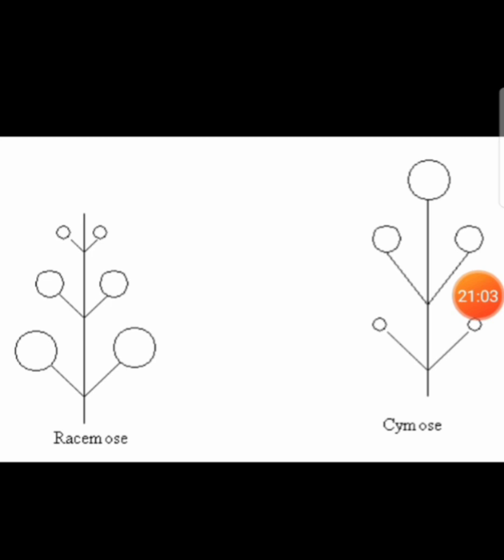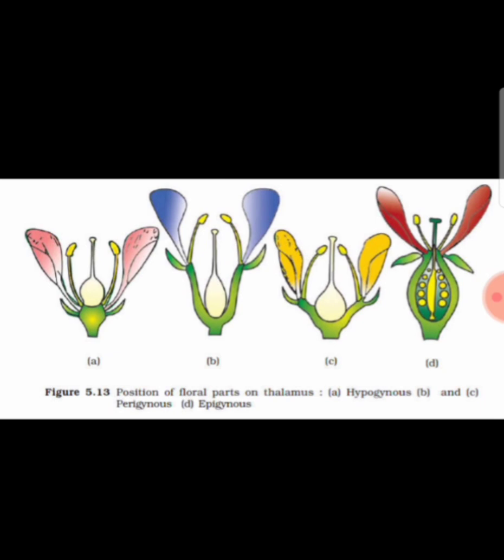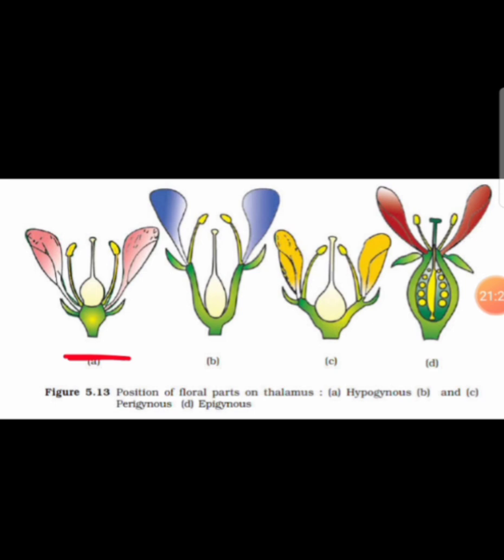Here you can find racemose and cymose inflorescence. If you find younger flowers at the tip and older flowers at the base, it is racemose. If you find older flowers at the tip and younger flowers at the base, it is cymose. Here you can also find the position of floral parts on the thalamus — hypogynous, perigynous, and epigynous — based on the position of the ovary.